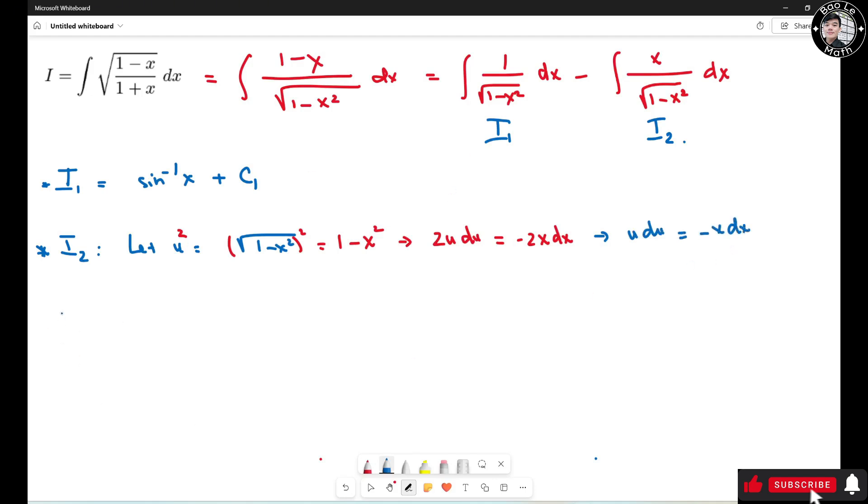So I2 becomes negative x dx. I replace with u du. So the integral of u du over square root of 1 minus x square, it could be u. So then this could be the integral of du.